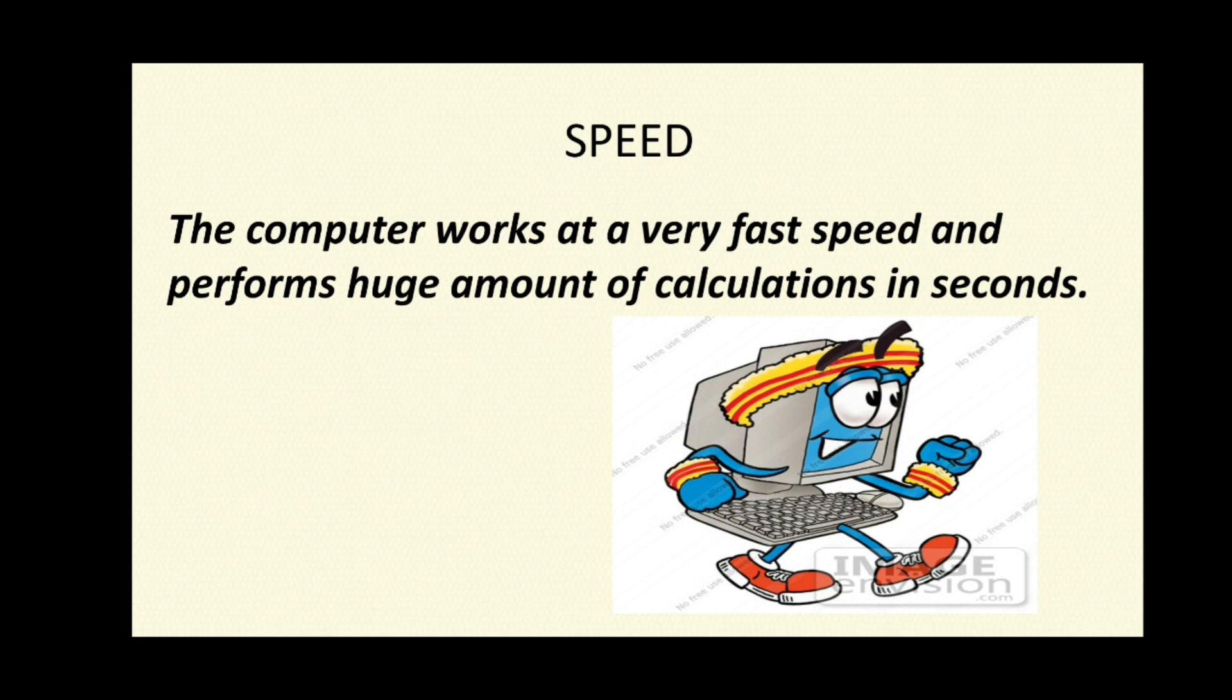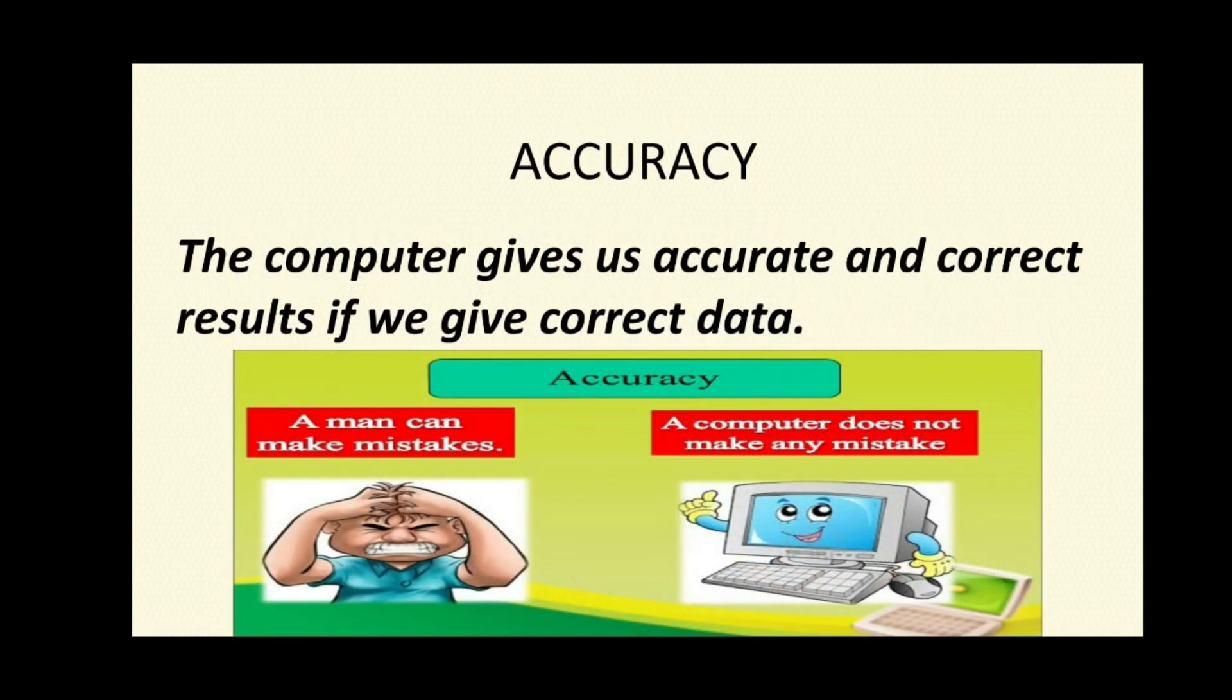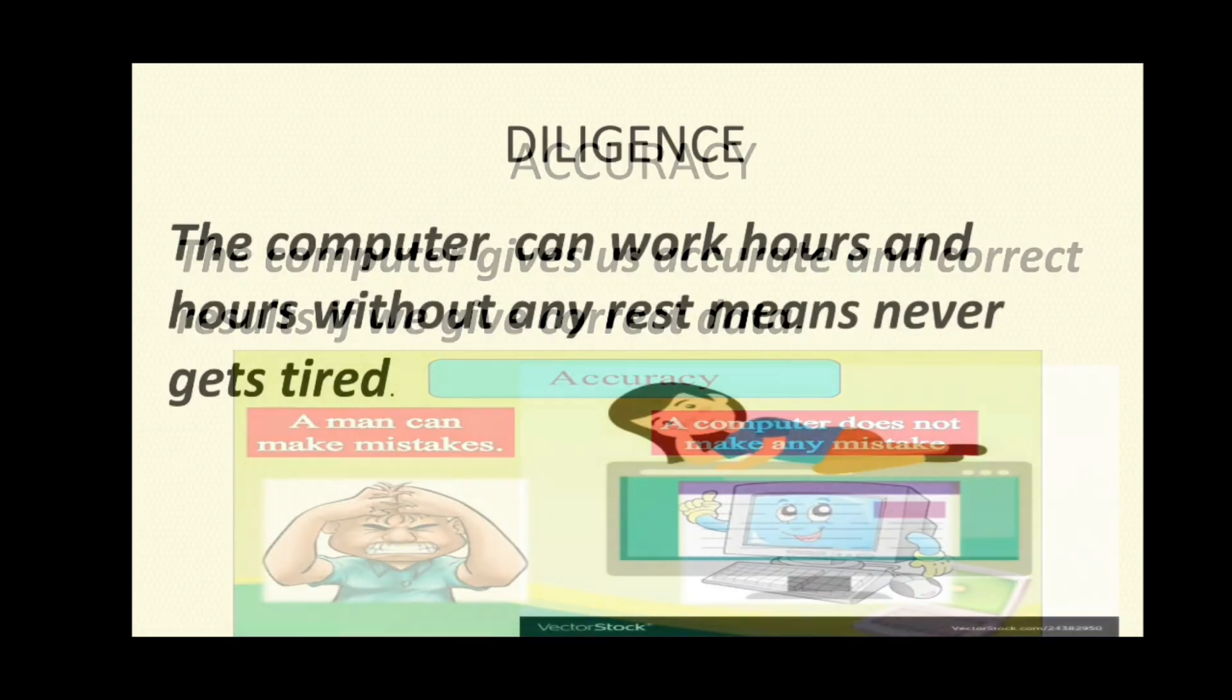Number two: accuracy. The computer gives us accurate and correct results if we give correct data. Although a computer works very fast, it still gives us accurate results with no errors. The output produced by a computer can be incorrect only if the input fed to it is wrong.